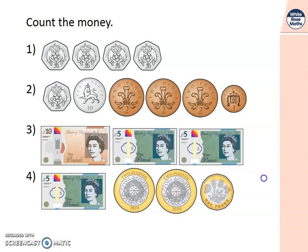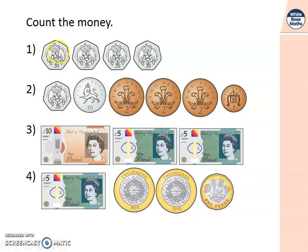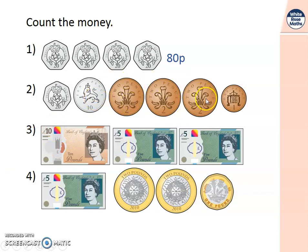Let's see how you got on. Number one: we've got 20 pence, add 20 pence, add 20 pence, add 20 pence — 20, 40, 60, 80 pence. In this one we have 20 pence, add 20 pence, that makes 30 pence — wait, then we add the rest on: 30, add 2, 32, 34, 36, add 1 more, is 37 pence.